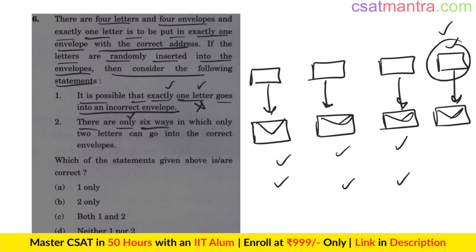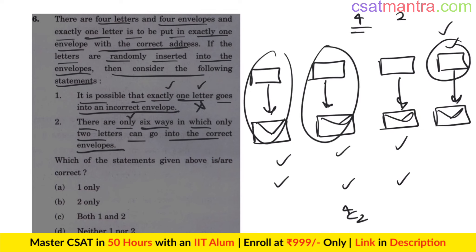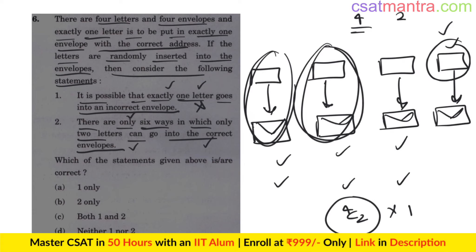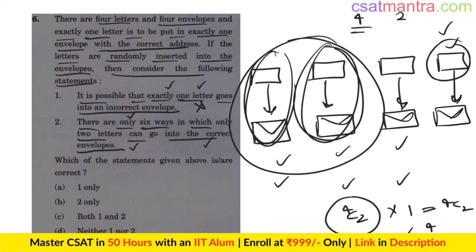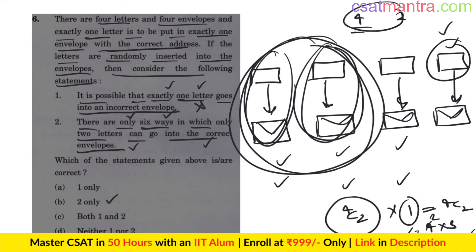There are only six ways in which exactly two letters can go into the correct envelopes. You have four letters; you choose two in 4C2 ways. Once chosen, you put them in correct envelopes in only one way. So 4C2 × 1 = 4C2 = (4×3)/(2×1) = 6. So only the second statement is correct — choosing which two letters is 4C2 ways, arrangement is one way, total six ways. Answer: B.